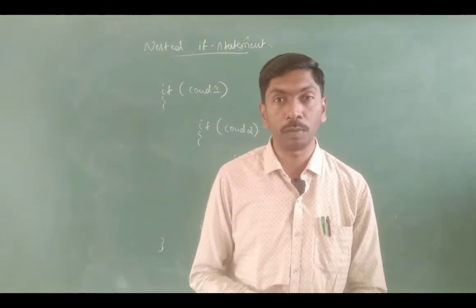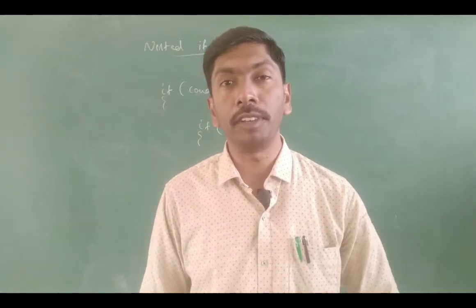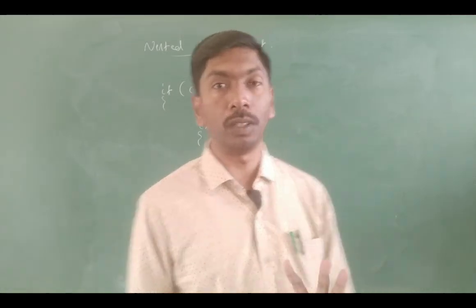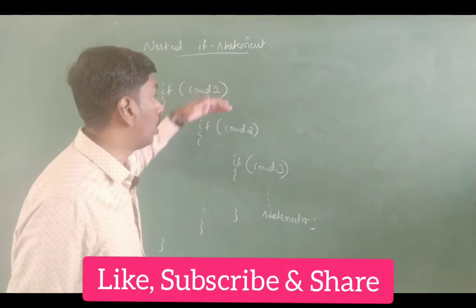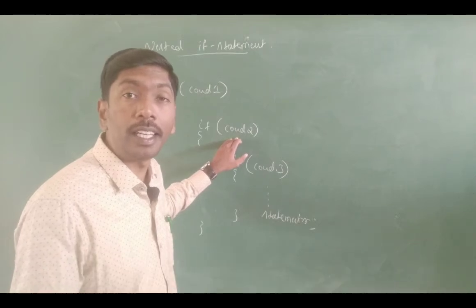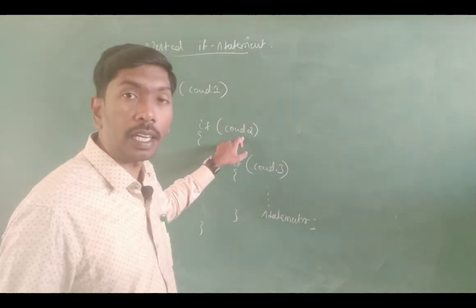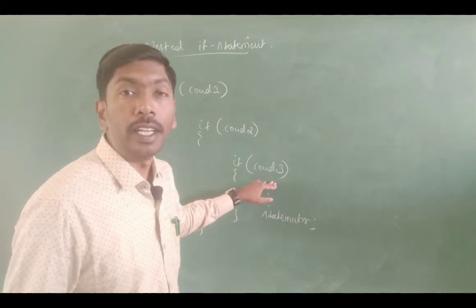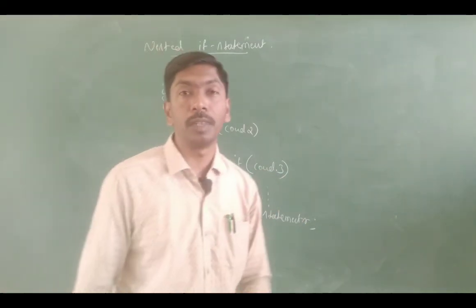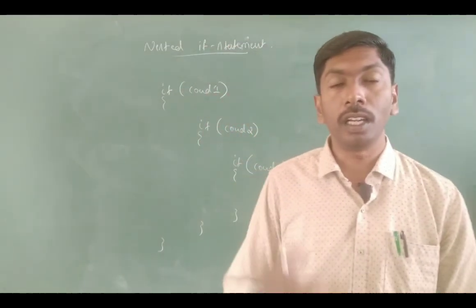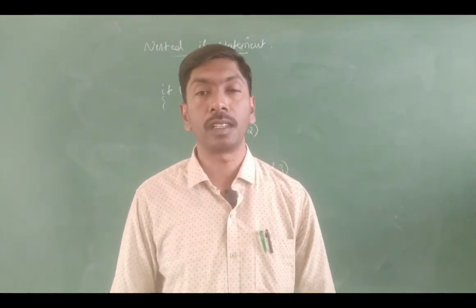Another example: IT sector campus placement. The first condition is a company cutoff of 70% aggregate. If you have 70%, you can apply — condition true, apply. Next, written test: if you clear the written test, you enter into the next block. Then HR round: if you clear the HR round, you enter the final block — that is placement, you get the job. This is how a nested if statement works with one condition inside another.